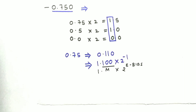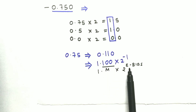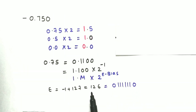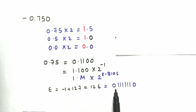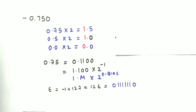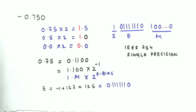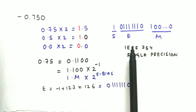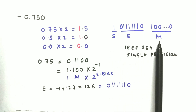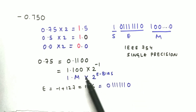Now we need to find the exponent. Comparing both sides, m = 1.00 and e − bias = −1. Adding 127 to −1 gives 126. Converting 126 to binary gives 01111110. Substituting the values: mantissa is 100, exponent is 01111110, and the sign value is 1 (since the number is negative). The fourth step is to arrange: sign is 1, exponent is the value above, and mantissa is 100 with the remaining bits filled with zeros.